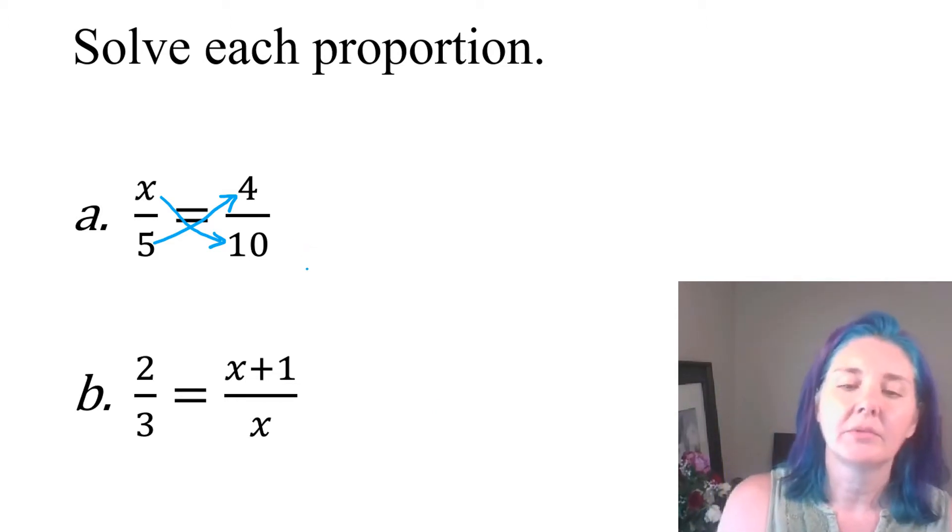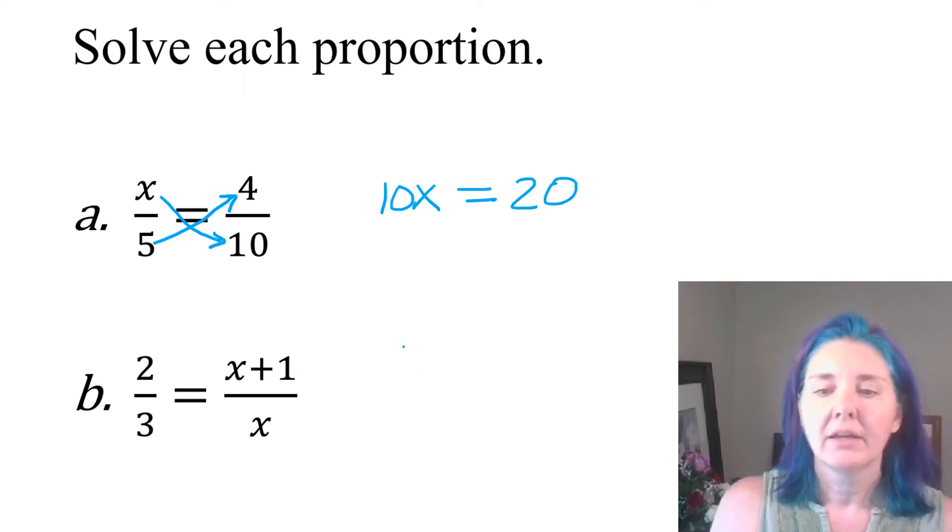Sometimes you'll hear this described as cross multiplying. Sometimes you'll hear it described as the product of the means equals the product of the extremes. The product of the extremes is referring to the x and the 10. 10 times x is 10x. The product of the means is referring to 5 times 4. That gives you 20. And then that way you no longer have fractions in your equation. So that's a nice little shortcut.